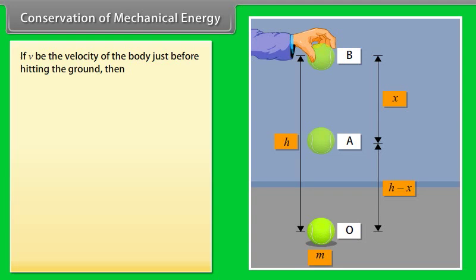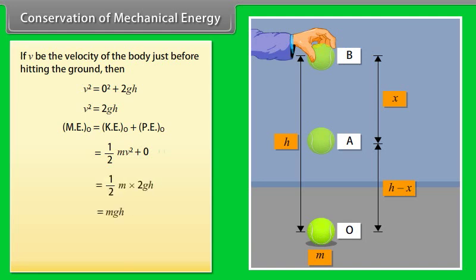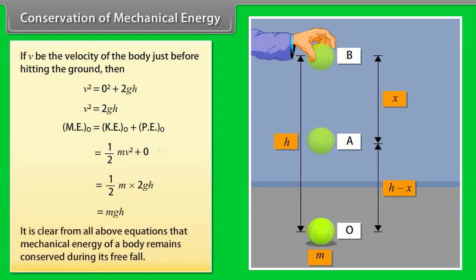If v be the velocity of the body just before hitting the ground, then v² = 2gh. Here mechanical energy of the body at O = kinetic energy of the body at O plus potential energy of the body at O. By calculating it, we get mechanical energy of a body at O is mgh. It is clear from all above equations that mechanical energy of a body remains conserved during its free fall.